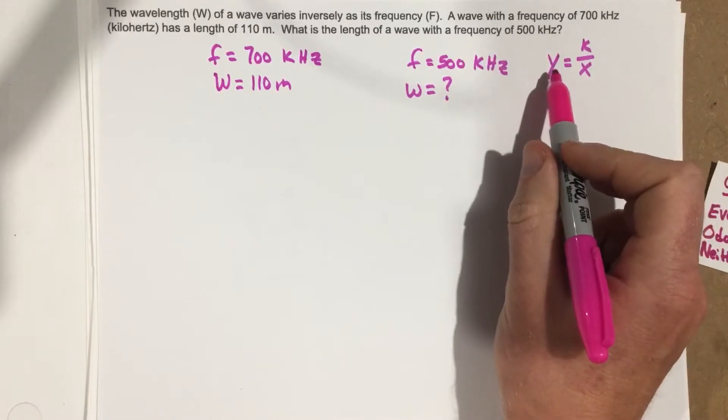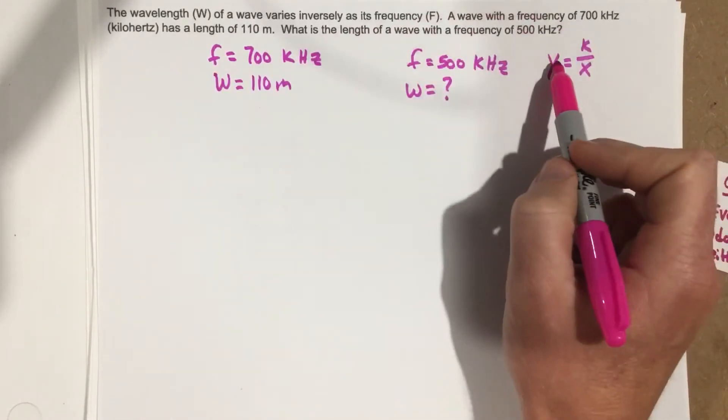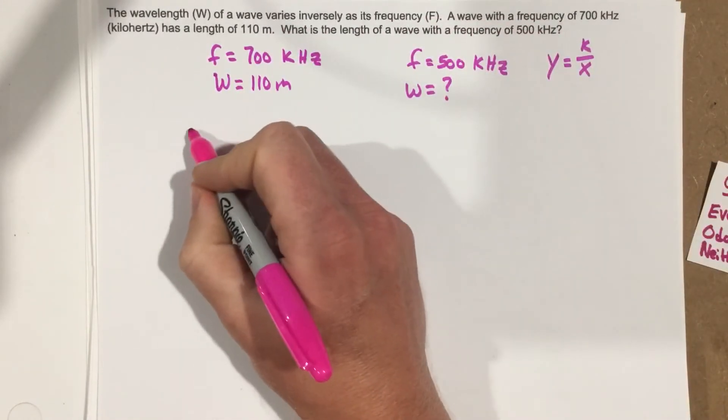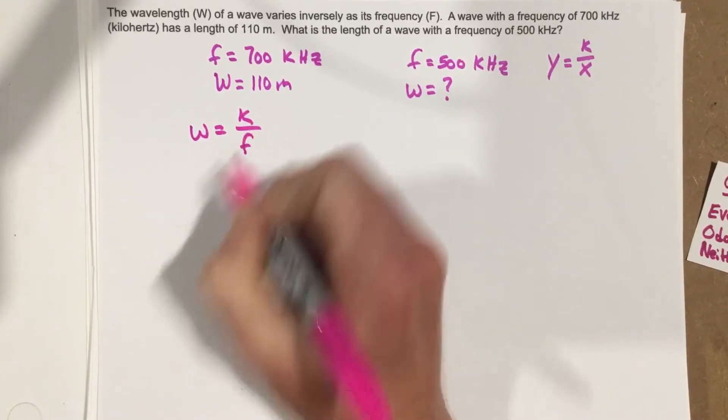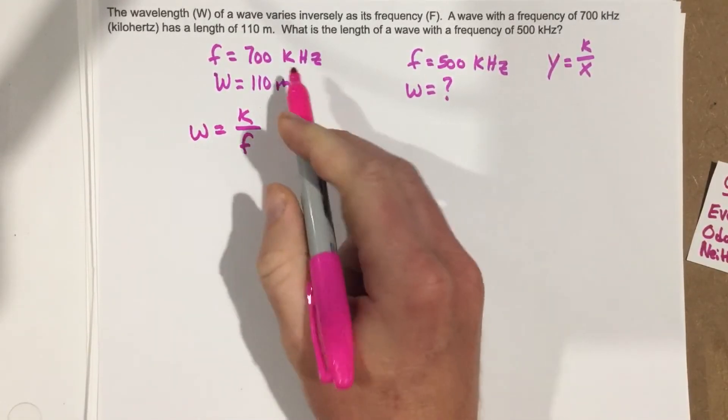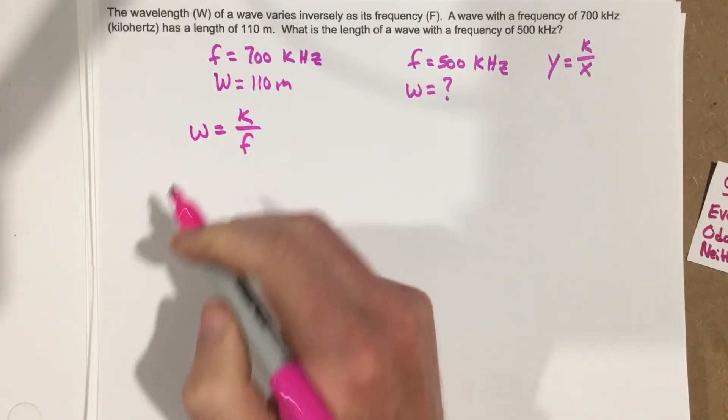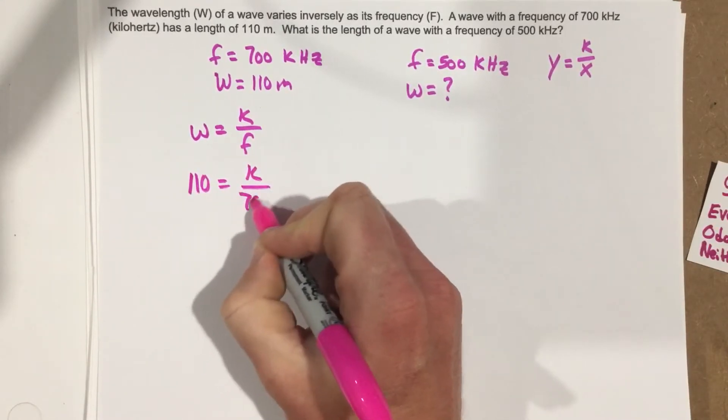So we're going to use variables for this that pertain to this problem. I'm going to replace y with w and f and x are going to switch. So it's going to be w equals k over f. And then I'm going to plug in what I know, which is the 700 and the 110. So I'm going to get 110 equals k over 700.